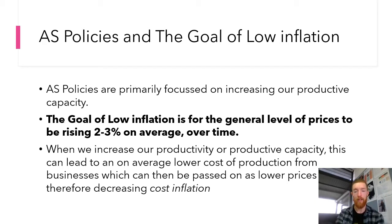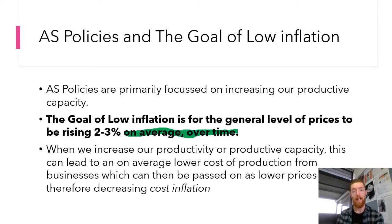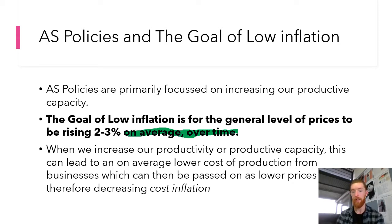That phrase 'on average over time' is incredibly important to getting full marks. Some people say two to three percent but it's 'on average over time' or 'on average over the business cycle.' That means we might have inflation at four percent one year and one percent the next — that's fine because it averages out to around that goal. When we increase our productive capacity, this can lead to lower average cost of production for businesses, which can be passed on as lower prices, decreasing cost inflation.